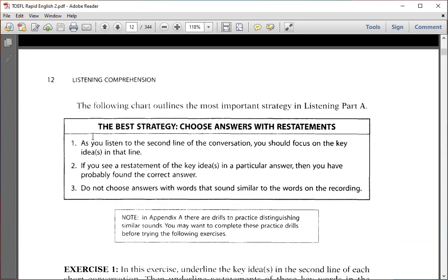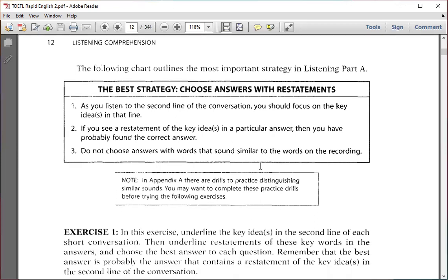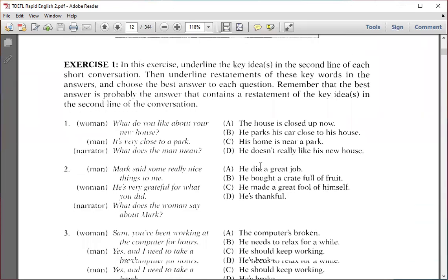The keyword and best strategy: Choose the answer with a restatement. As you listen to the second line of the conversation, you should focus on the key ideas in that line. If you find a restatement of the key ideas in a particular answer, then you have probably found the correct answer. Do not choose answers with words that sound similar to the words on the recording.